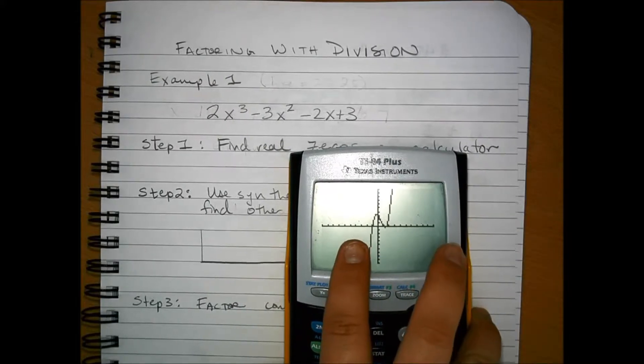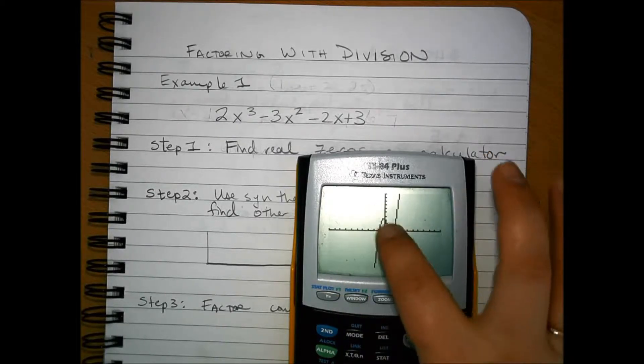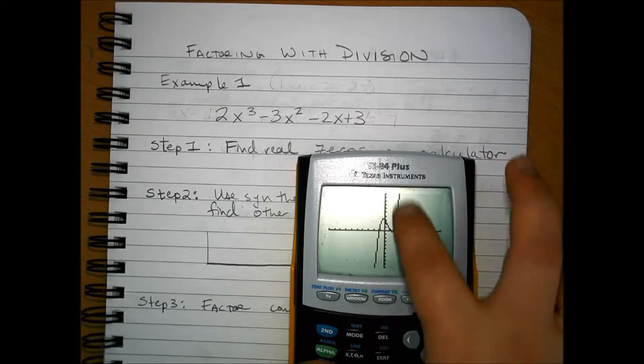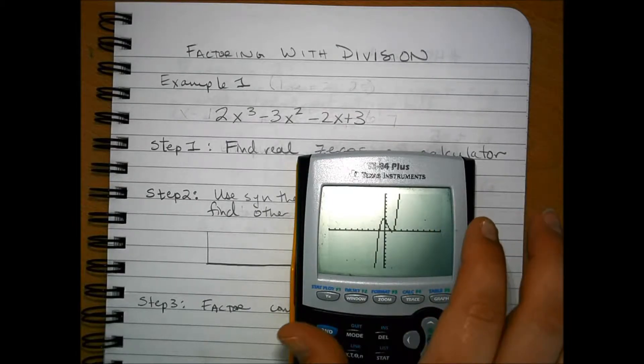So we're seeing a decrease, we're seeing an increase, and also you're going to want to start getting familiar with the shapes of the graph. So this shape is a cubic function, so you can see that this is the entire graph in the window.